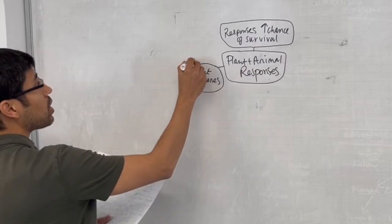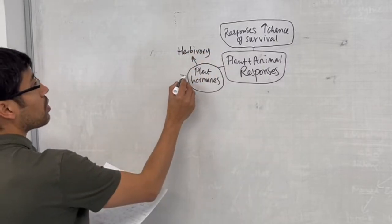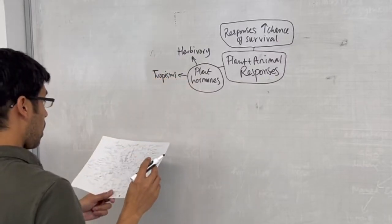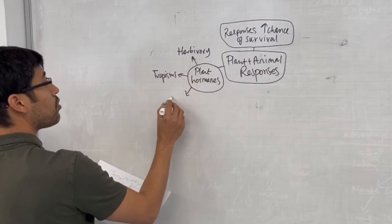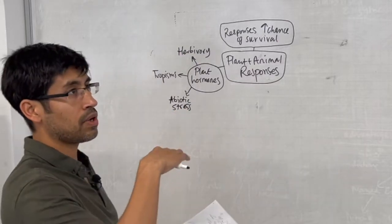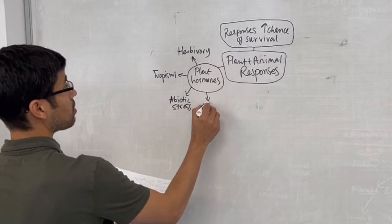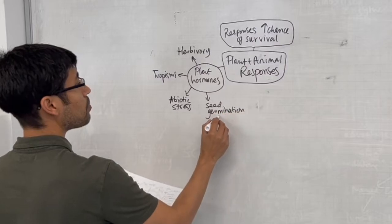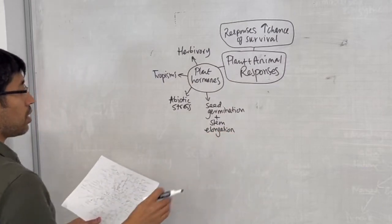We have plant hormones. Now what are the kinds of responses that could be made? We're talking about responses to herbivory. Another main kind of response is tropisms. We also have responses to abiotic stresses like lack of water or temperature getting too hot. And finally, we have seed germination and stem elongation.